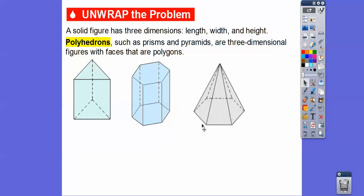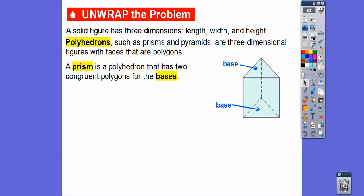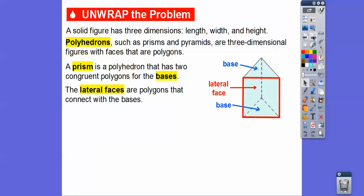Can you see a three-dimensional figure right here? This will be a pyramid. This is called a prism right here, and this is also called a prism. So prisms are polyhedrons that have two congruent polygons for the bases — the top and bottom are congruent to each other, so these would be called the bases. Prisms are polyhedrons, and polyhedrons have polygonal sides. We'll deal with some other solids that are not polyhedrons in a little bit. The lateral faces are polygons that connect with the bases. Here's a lateral face — it's a rectangle right here.